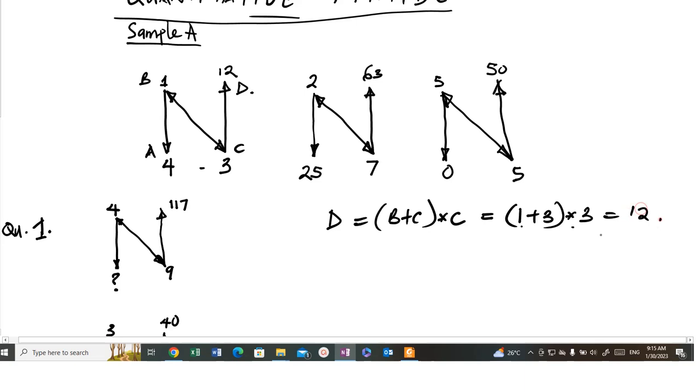Now, the same for this, 2 plus 7. Let's look at this too. For this, the D is 2 plus 7 times 7. So, you have 9 times 7, which is 63.